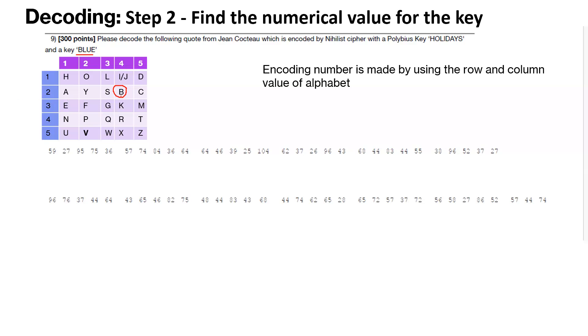That's how the encoding is done. So encoding is done by using the row and column value of the alphabet. So in this case, B is equal to 24. So for the blue, so entire blue, the encoding would be 24. And for L, L is here.